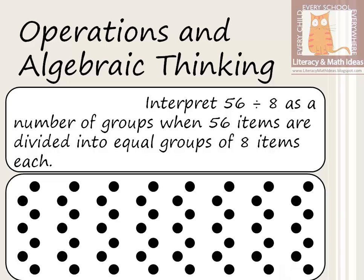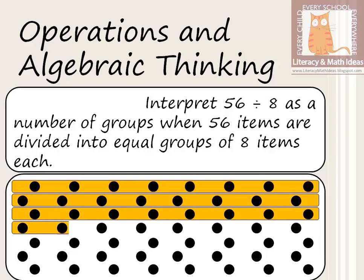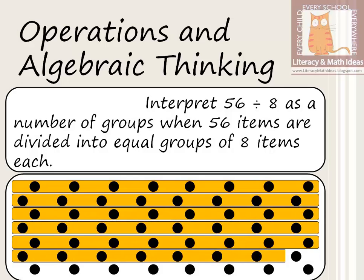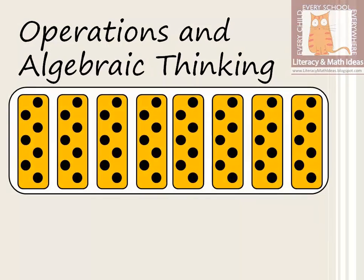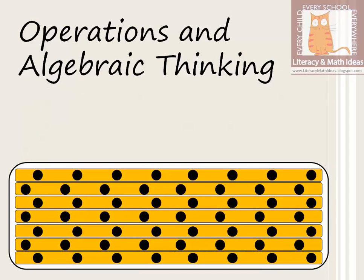Starting with 56 items — which could be cupcakes, pens, anything — how many groups of 8 can we form? There's the first group of 8, the second, third, fourth, fifth, sixth, seventh — we have 7 groups each consisting of 8 items. In the first approach we had 8 groups of 7 items; here we have 7 groups of 8 items. In both cases, the total is 56 items.